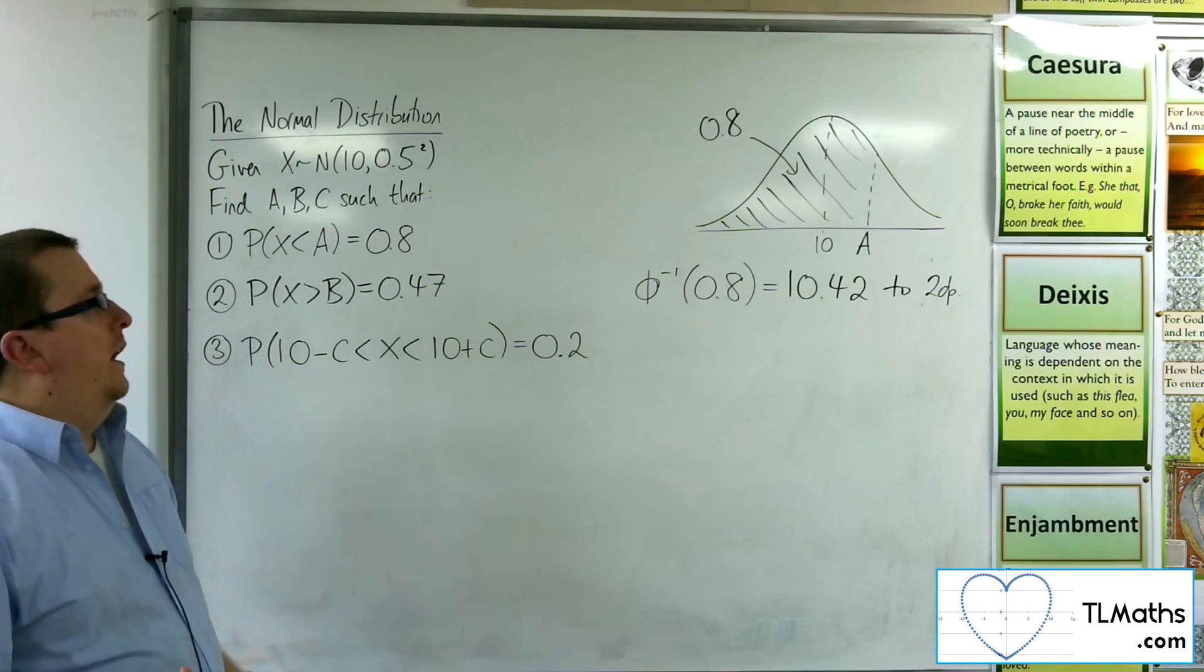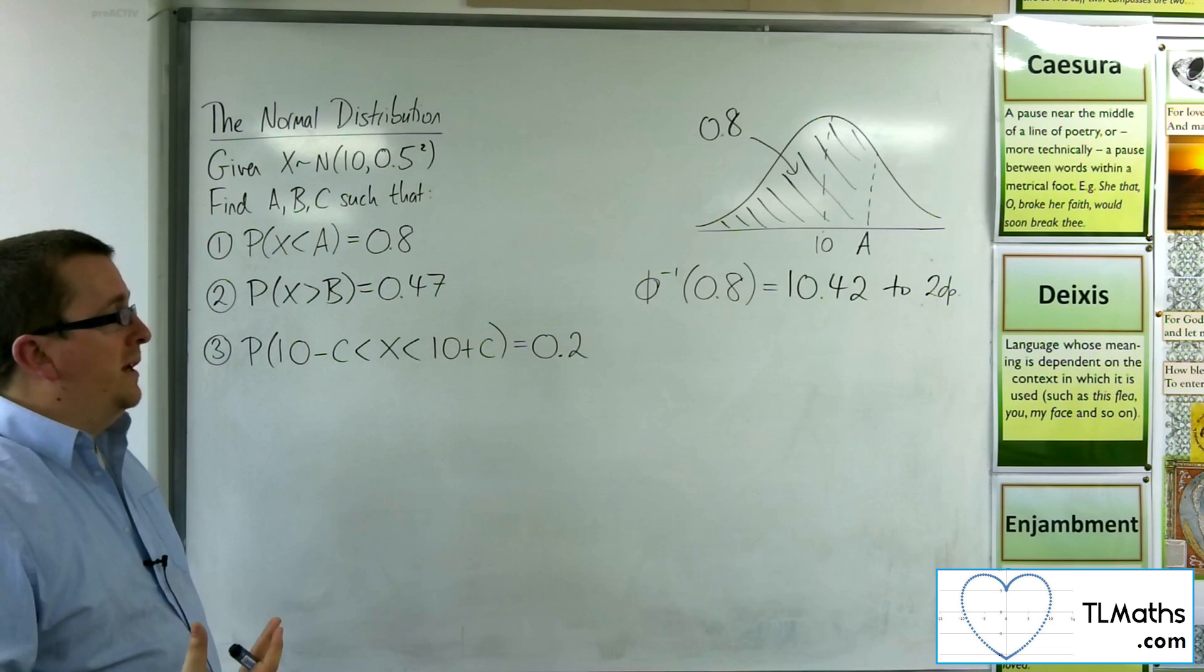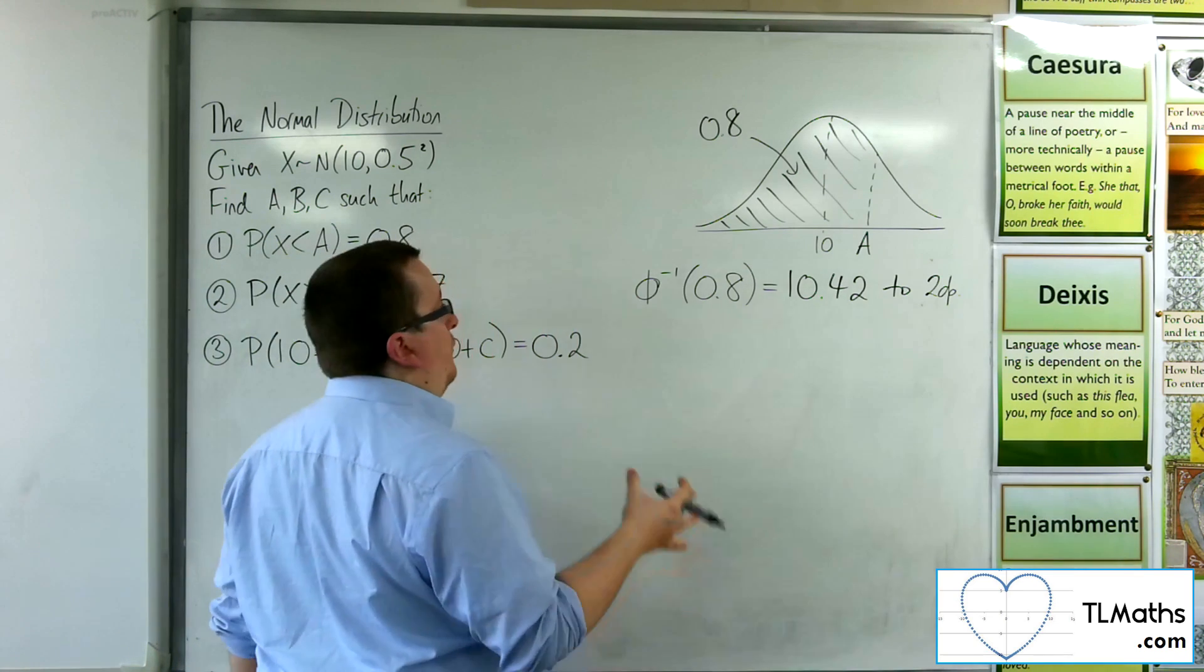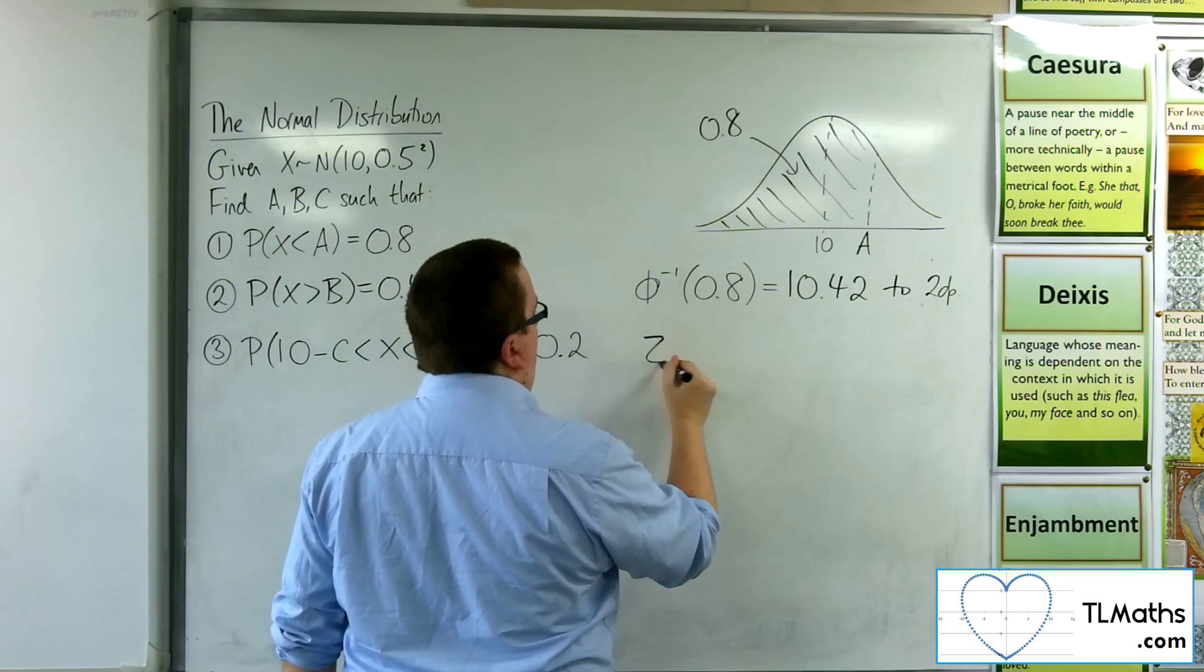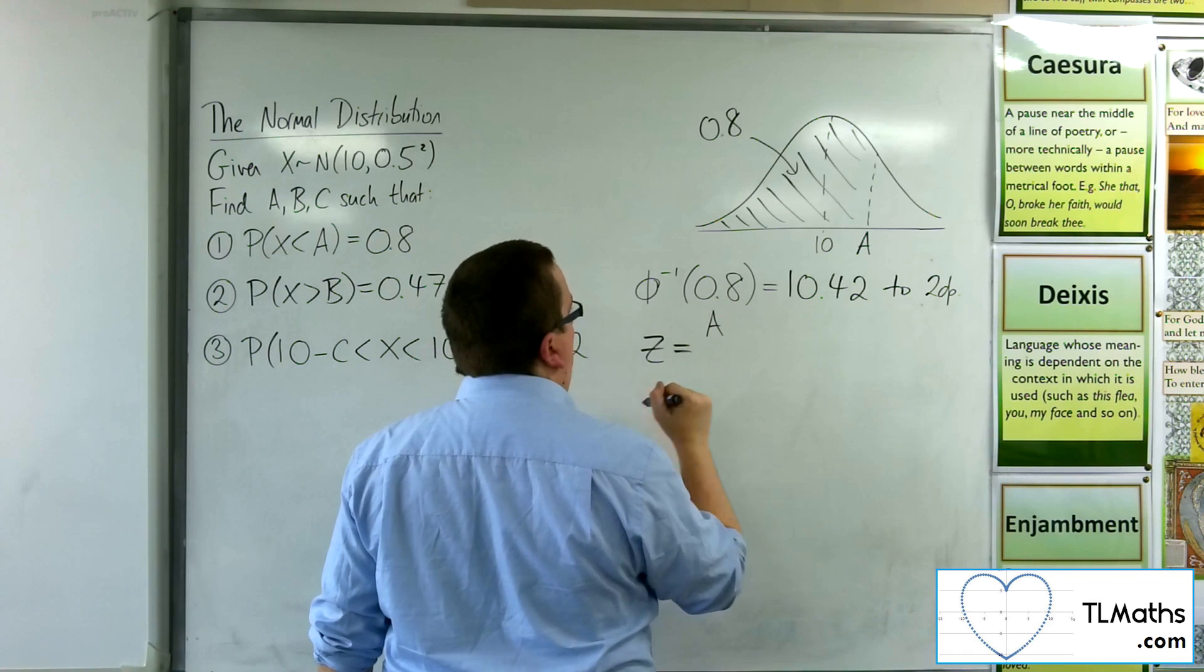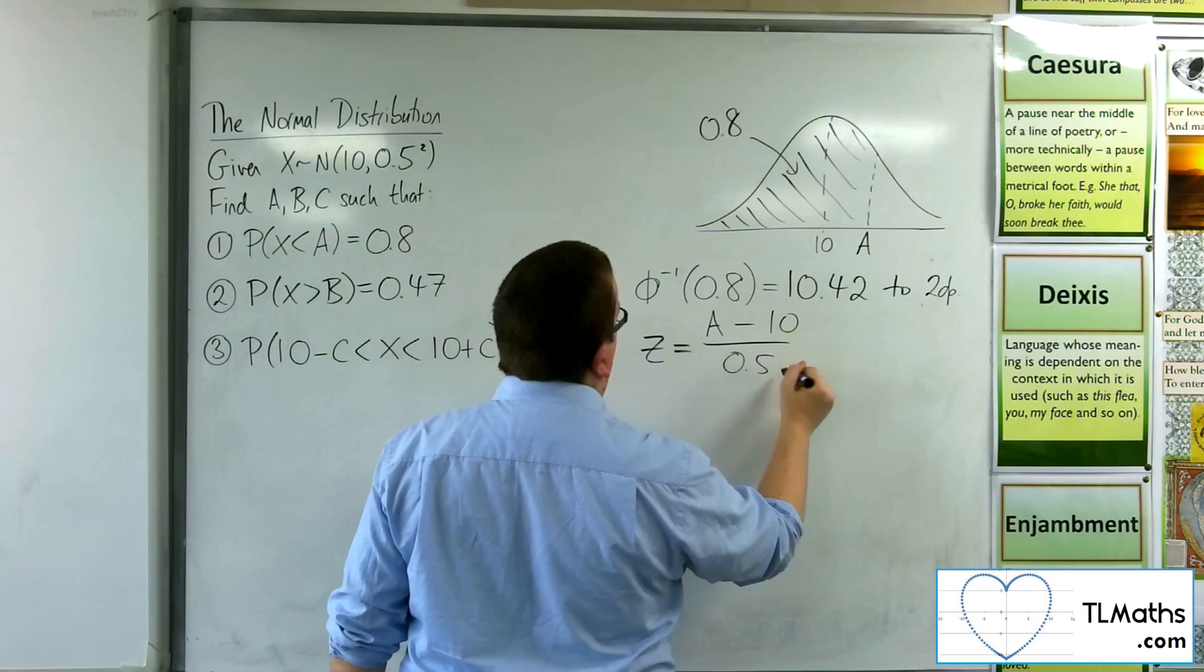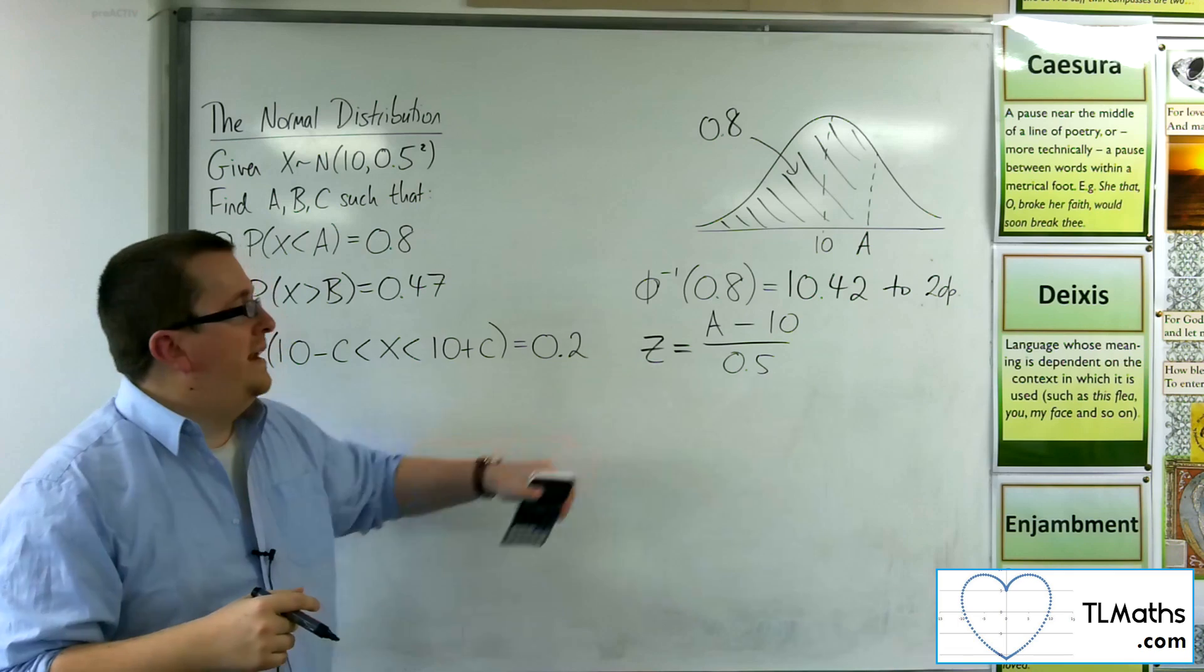You can work with the standard normal distribution and use the formula as well. If you were to do that, then what you would be looking at is, first of all, you'd have to find the z value that corresponds to a. So z is equal to, and the a value is this one, take away 10, divided by the standard deviation, which is 0.5.